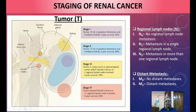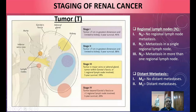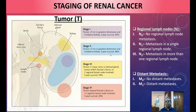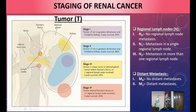In Stage II, the tumor is more than 7 cm in greatest dimension but still limited to the kidney. The increased size decreases prognosis. Five-year survival declines to 88% compared to 95% for Stage I lesions less than 7 cm.